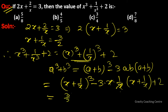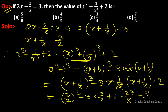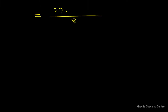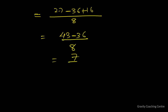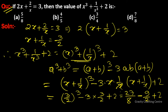Substituting x + 1/x = 3/2: (3/2)³ - 3 · (3/2) + 2 = 27/8 - 9/2 + 2 = 27/8 - 36/8 + 16/8 = 7/8. So the answer is 7/8, and option D is the correct answer.